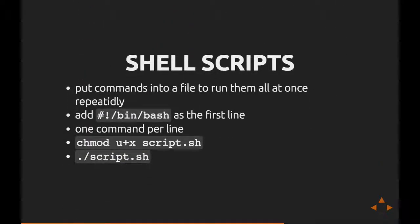Briefly, shell scripting: if you put commands into a file you can run them from the shell. Add a shebang line — #!/bin/bash — to the beginning of the file, then mark it executable with 'chmod u+x script.sh' so the user gains execute privileges, then run it with './script.sh'. We'll talk more about permissions in just a moment.